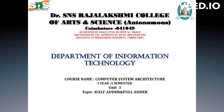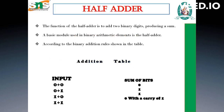Today let us see what half adder and full adder is in computer system architecture. A half adder is a combinational logical circuit designed to add two binary digits. It provides two outputs: a sum bit and a carry bit. The half adder circuit is designed by connecting an exclusive OR gate and one AND gate, and it has two input terminals and two output terminals.